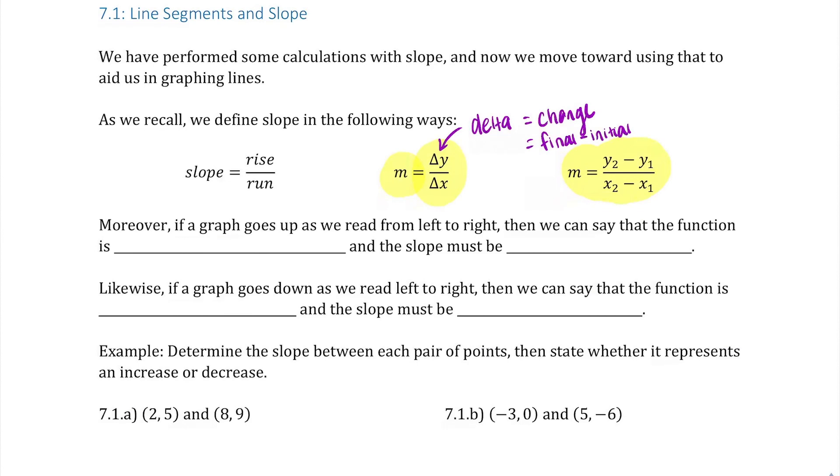All right, so if a graph goes up and we read from left to right, we could say that the function is increasing and the slope must therefore be positive. Likewise, if a graph goes down as we read left to right, then we can say the function is decreasing, and then the slope must be negative.